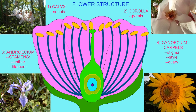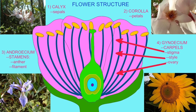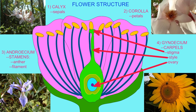The innermost whorl in a flower is the gynoecium, which consists of one or more carpels. A carpel consists of a stigma — the exposed receptive area where pollen grains land — and the long style through which pollen tubes grow to reach the ovary.